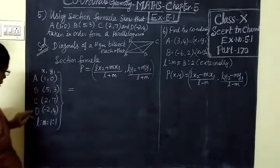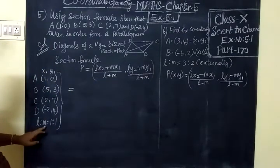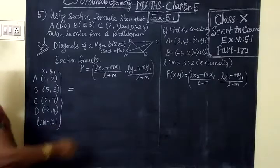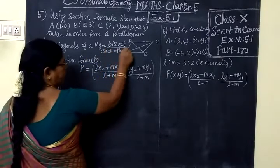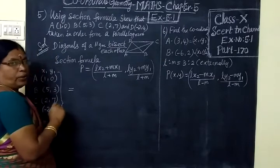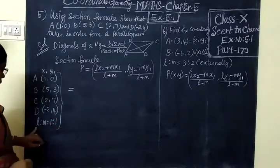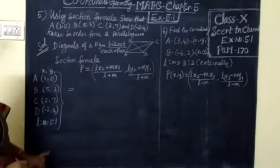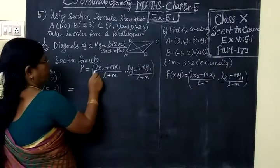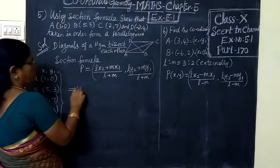Section formula: Lx2 plus Mx1 by L plus M, Ly2 plus My1 by L plus M. This is given in the book. So please go through. Now, A, B, C, D, coordinates written. L is to M equal to 1 is to 1. Why? This is the bisect piece. So E also cut there. L plus M is 1 to 1. So for that, you are substituting L value 1.